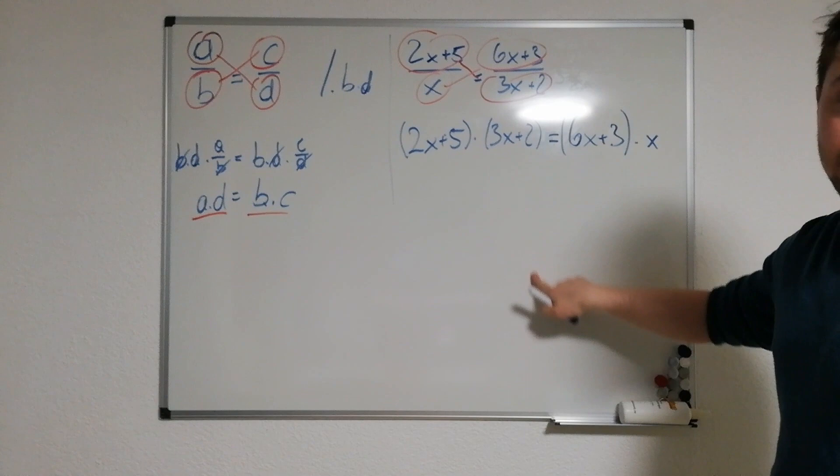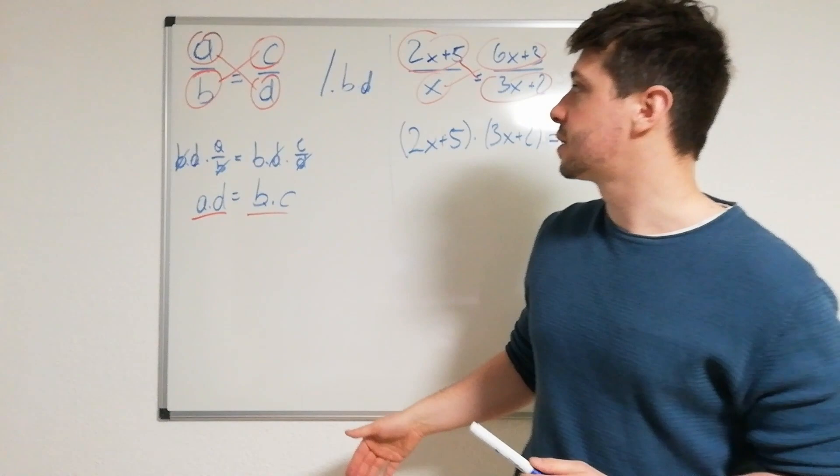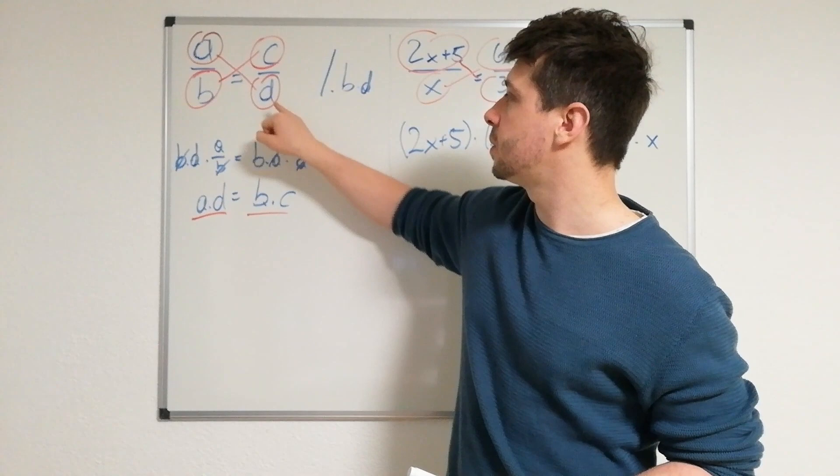Simple reminder: just go ahead, fraction equals fraction, multiply upper one to lower one equals lower one times upper one. That's about it.